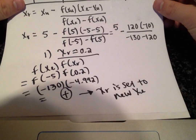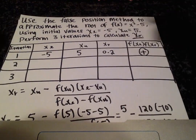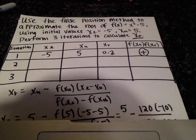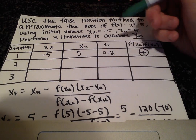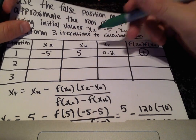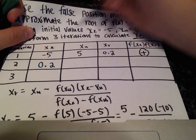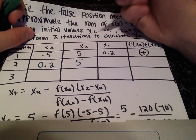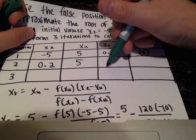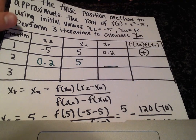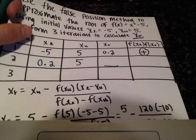Now we can start filling in the next portion. X-r is now our new lower limit, so 0.2, and the upper limit remains unchanged at 5. Now we need to calculate the next x-r value, so let's get a separate sheet of paper and do that.